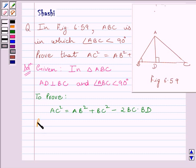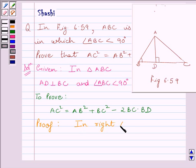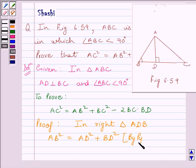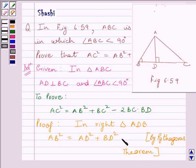Let us start the proof now. We know AD is perpendicular to BC. So this implies triangle ADB is a right triangle, right angle at D. We will consider triangle ADB. In right triangle ADB, AB square is equal to AD square plus BD square, by Pythagoras theorem. Let us name this expression as 1.